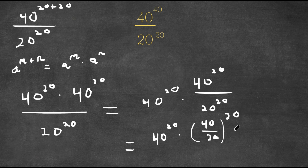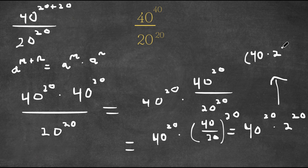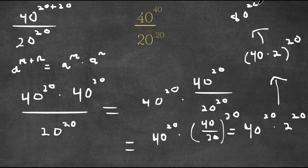40 divided by 20 is simply just 2. So now we have 40 to the power of 20 times 2 to the power of 20. And this is equal to 40 times 2, to the power of 20, which is equal to 80 to the power of 20. So this is our answer.